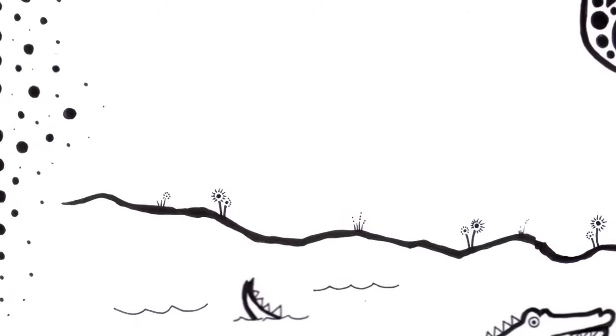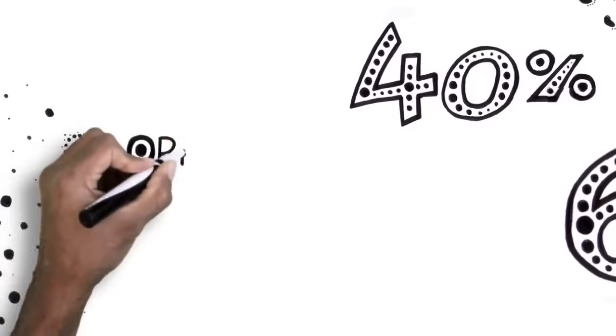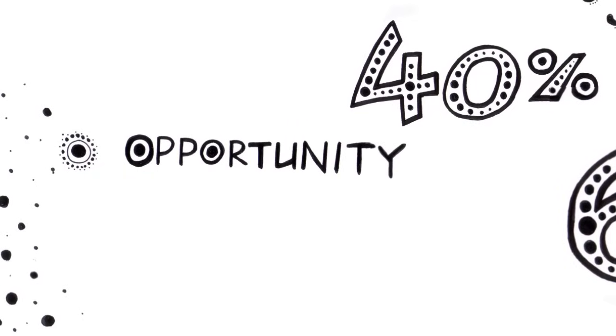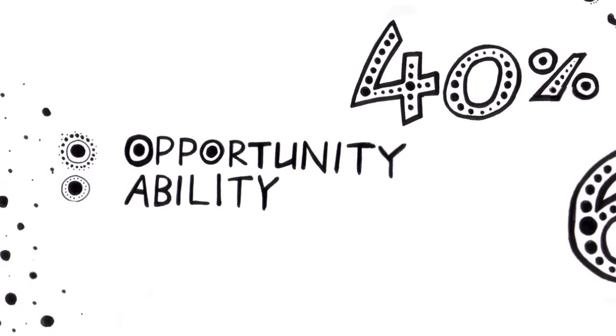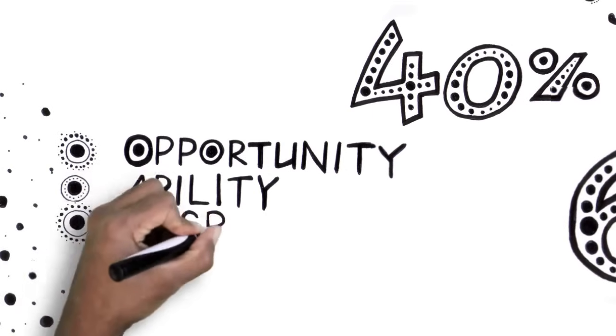The difference between those families who have learnt to swim the river and those who haven't is dependent upon three things: having access to opportunities in education, employment, and housing; having the ability to access these opportunities; and having a level of responsibility to bring the other two together.